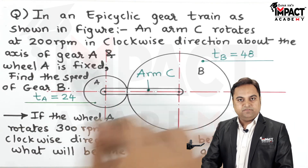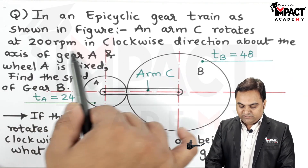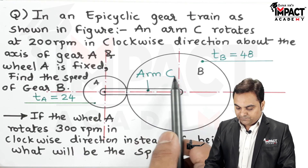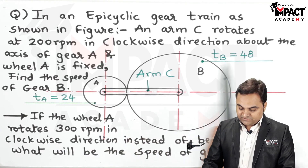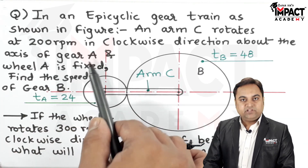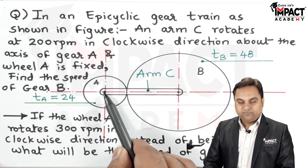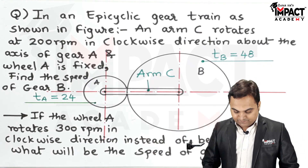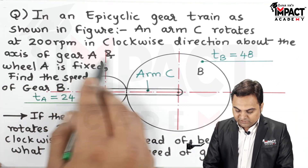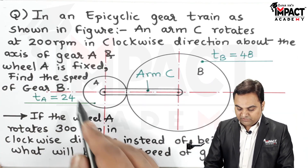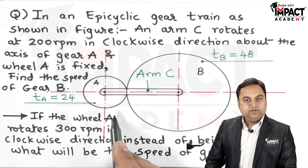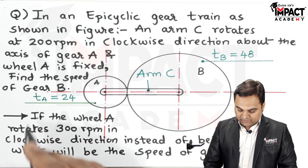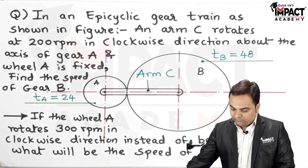It is given that in an epicyclic gear train as shown in the figure, arm C rotates at 200 RPM in a clockwise direction. As we can see in the figure, arm C is rotating in a clockwise sense about the axis of gear A, which is fixed. The wheel A is fixed, and while keeping A fixed we have to rotate arm C.